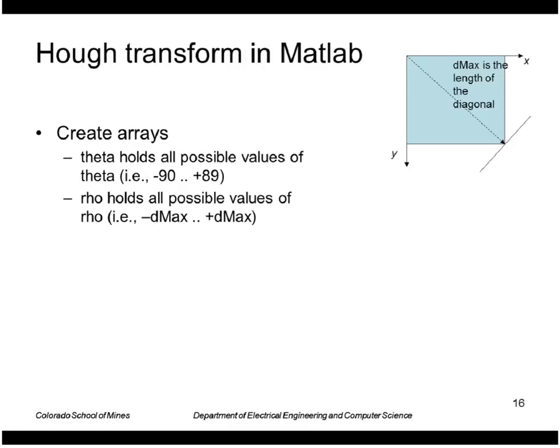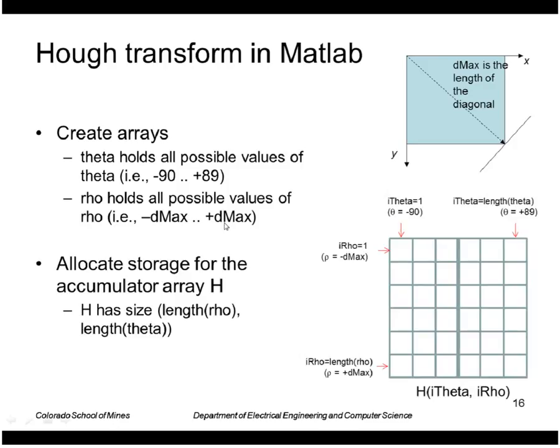We'll look at how to do this in MATLAB. First, we're going to create a theta array. It will contain the values minus 90, minus 89, minus 88, and so forth up to plus 89. We'll also create a rho array, which will be all possible values of rho going from minus d max to plus d max. We'll create a parameter array called h that holds all possible values of theta and rho.